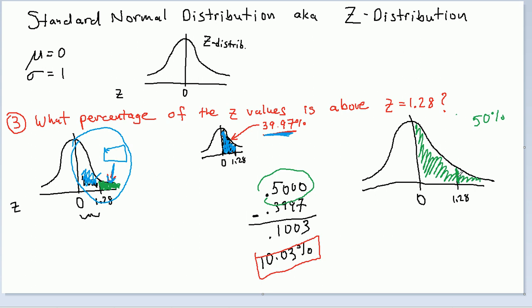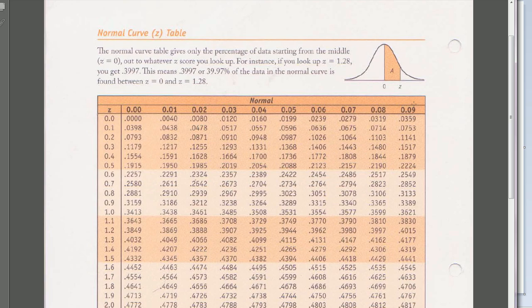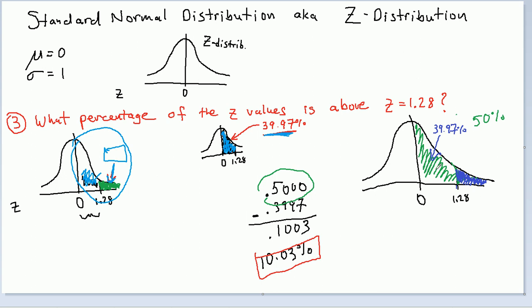Then we know that the part that we want is the tail, what we call the tail, as opposed to the body. We want the tail in this example because that's what it asks us for. Now, in order to get the tail, when the table gives us the body, we look up 1.28 and we get 39.97%, and we know from the picture on the table that 39.97 is this area here. That's not what we want. So, in order to get rid of what we don't want, the 39.97, and just be left with what we do want, which is the tail over here, what we do is we do 50% minus 39.97%. And what that's doing is that's taking away this guy and only leaving this part.